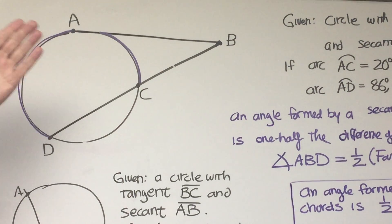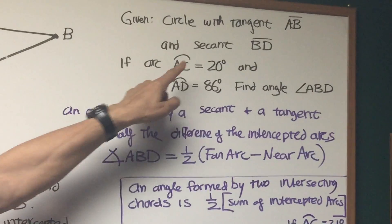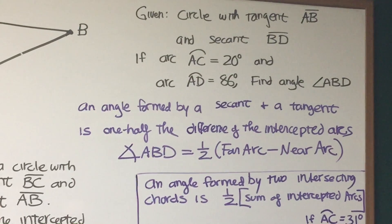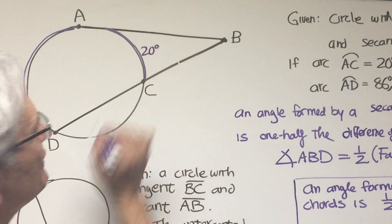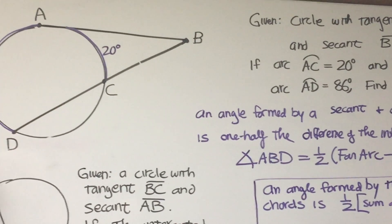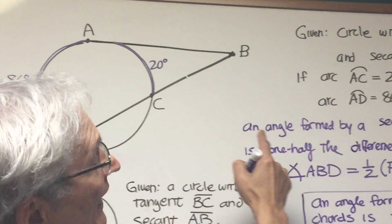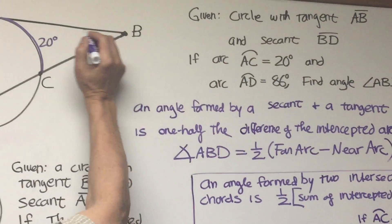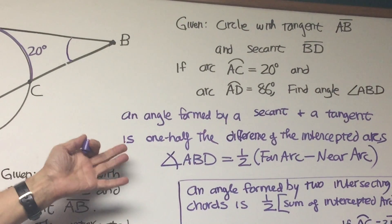So let's do a problem with a specific example. We're given a circle with tangent AB and secant BD and arc AC is 20 degrees. So we know this is 20 degrees and we know that arc AD is 86 degrees. So we want to know the angle, find the measure of angle ABD which would be this angle right there. Well there we refer to that theorem.